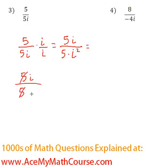Now the 5s can cancel out. And i squared is just negative 1, right? Because i is just the square root of negative 1. So negative 1 squared is just negative 1.